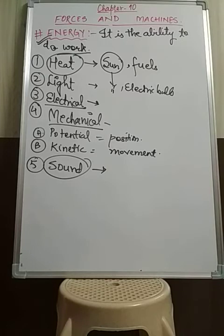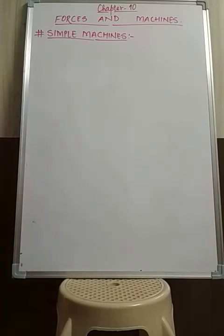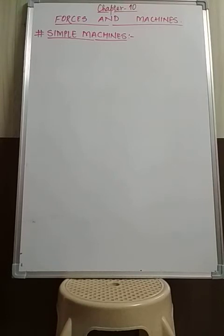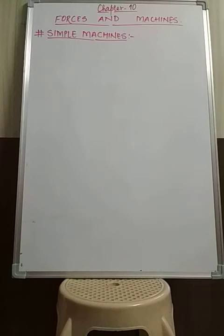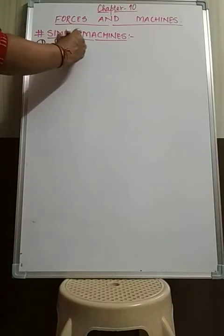Our next topic is simple machines. What do you use to fix a nail on a wall? You would use a hammer instead of your hands. Like a hammer, we use many tools in our day-to-day life to make our work easier and faster. These tools are actually machines. Machines are of two types: simple machines and complex machines.